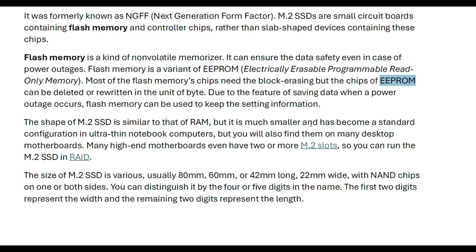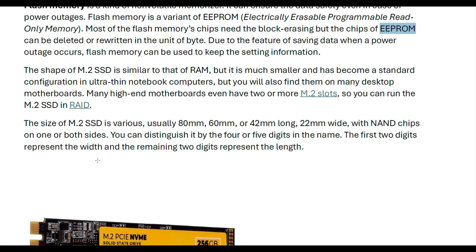The shape of M.2 SSD is similar to that of RAM but much smaller, and it has become the standard configuration in ultra-thin notebooks and computers. You will also find them in many desktops, and many high-end motherboards have two or more M.2 slots so you can run M.2 SSDs in a RAID configuration. The size of M.2 SSD varies — typically 80mm, 60mm, or 42mm long, and 22mm wide.